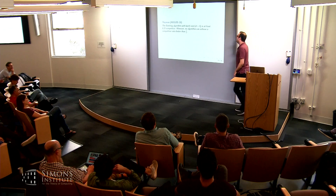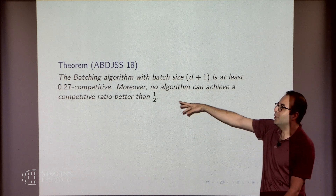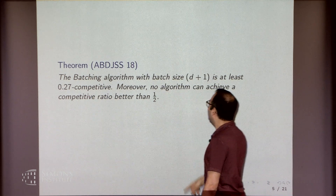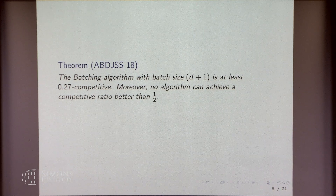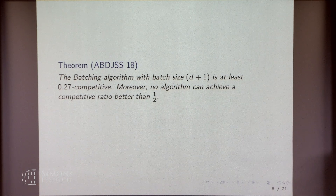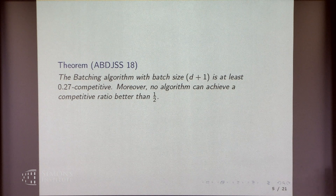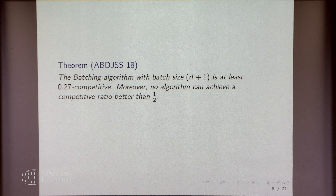This is the best thing we can do: the batching algorithm with batch size d plus one achieves at least 1 over 3.5, roughly 0.279 of optimal. Moreover, no algorithm — deterministic or randomized — can achieve a competitive ratio better than half. So there is a gap. The benchmark is the offline solution with the same constraint: you can't match vertices that are too far apart, but you know the future when you decide.